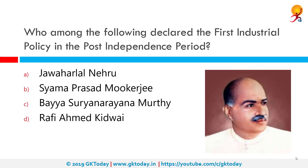Who among the following declared the first industrial policy in the post-independence period? The correct answer is Shama Prasad Mukherjee. Shama Prasad Mukherjee was an Indian politician, barrister and academician who served as Minister for Industry and Supply in Prime Minister Jawaharlal Nehru's cabinet.